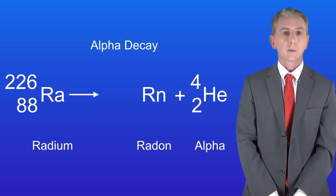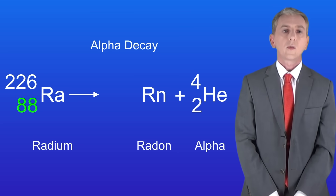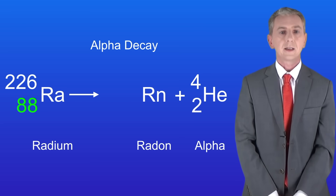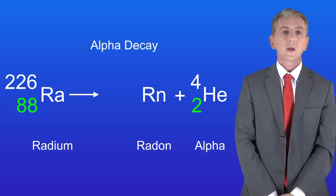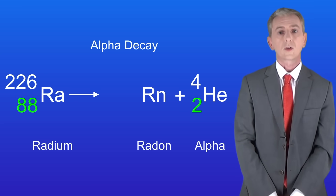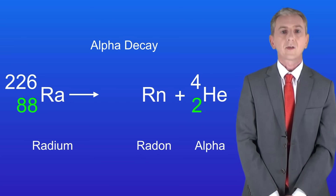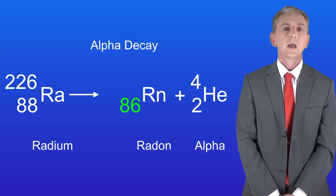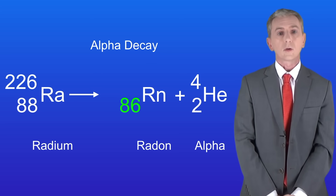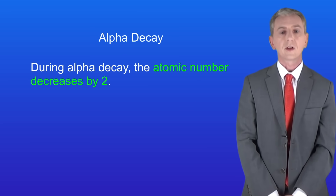Radium has an atomic number of 88, so the original radium atom had 88 protons. The alpha particle has got two protons. To work out the atomic number of the radon produced we've got to subtract 2 from 88, so the atomic number for radon is 86. This gives us the first rule for alpha decay: during alpha decay the atomic number decreases by 2.